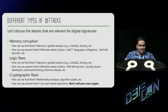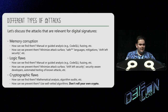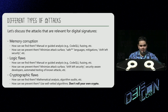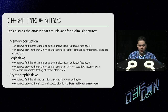What types of attacks are relevant for digital signatures? We have three broad categories. First, memory corruption issues — these are your classic out-of-bounds read, write, or stack overflow vulnerabilities that can often arise from the mishandling of untrusted data. How do we find them? Typically, manual or guided analysis, as well as fuzzing. How do we fix them? One of the best pieces of advice is to minimize your attack surface — limit the code that processes untrusted data. You can also use various mitigations or memory-safe programming languages like Rust to substantially reduce your risk.